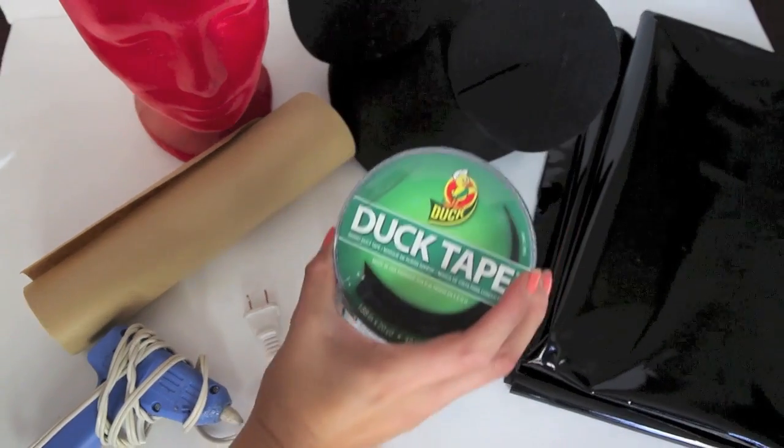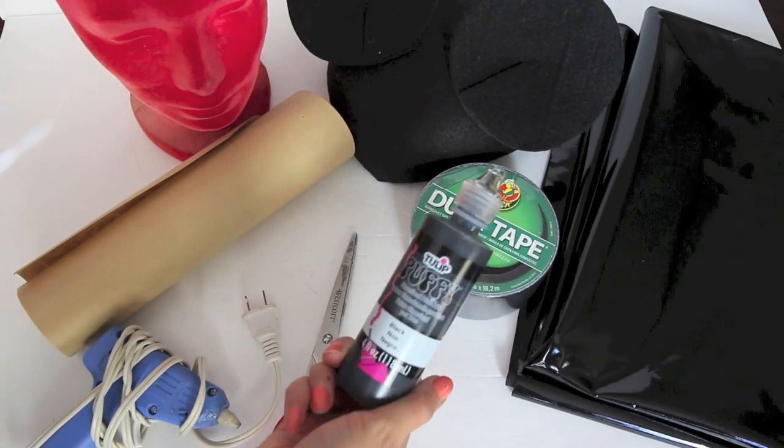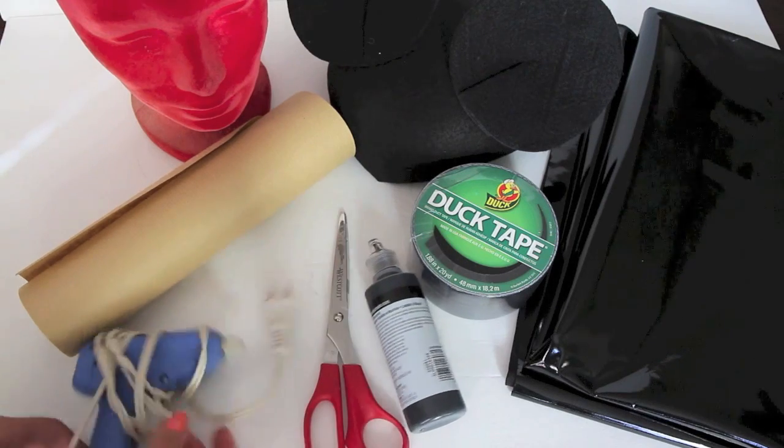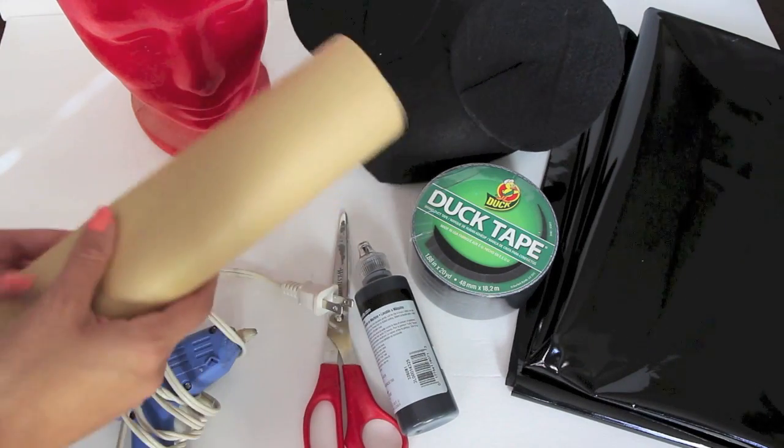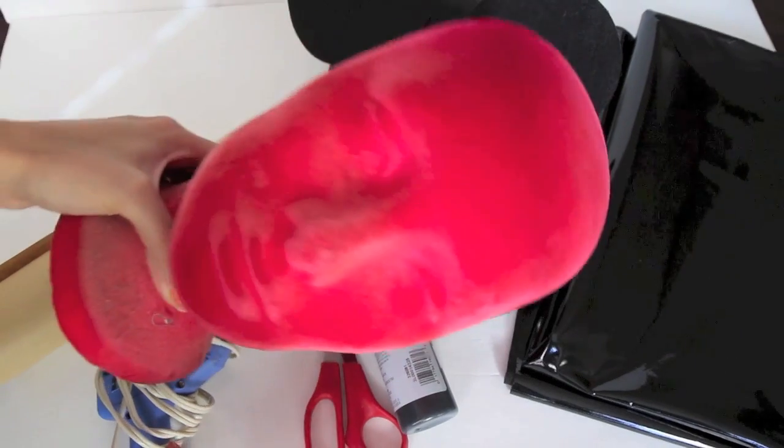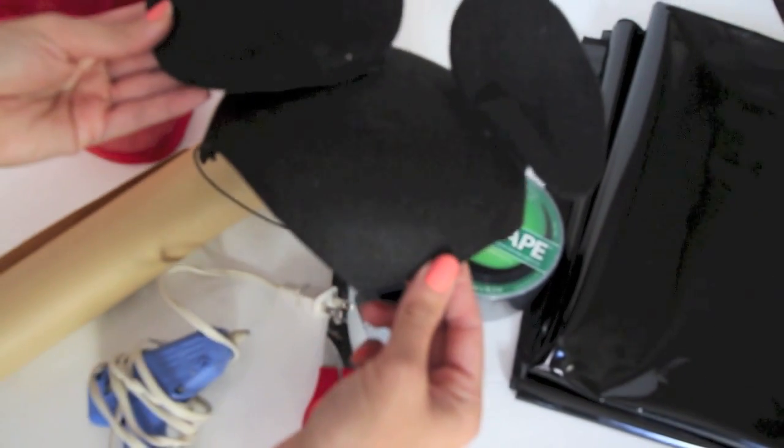You need the following materials for this tutorial: first off, some duct tape, color black. You also need some black puffy paint, a pair of scissors, a hot glue gun and a lot of glue sticks. You also need some craft paper—get a roll of it—and also this cool head display which you can actually find at any major craft stores.